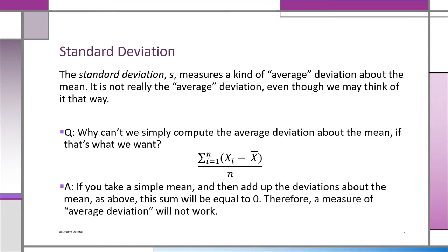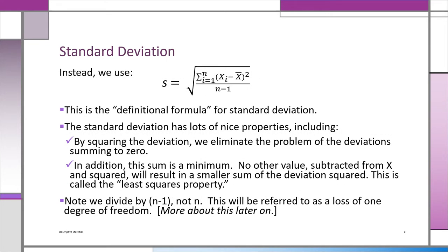Here is the definitional formula for the standard deviation. We square the deviations so the pluses and minuses don't cancel. We take the sum of (xi minus x-bar) squared — that's called the sum of squares — and divide by n minus 1. This squaring prevents the sum from being zero, and this sum also has the least squares property: no other value produces a smaller sum of squared deviations. We divide by n minus 1, which is called a loss of a degree of freedom.